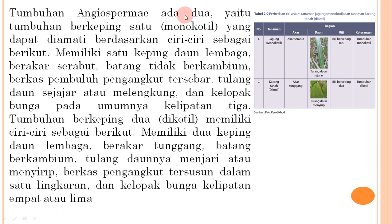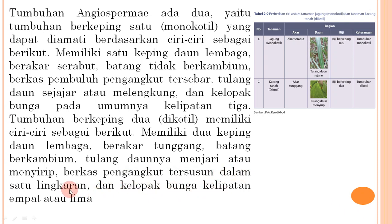Tumbuhan Angiospermae ada dua: monokotil (berkeping satu) dengan ciri memiliki satu keping daun lembaga, berakar serabut, batang tidak berkambium, berkas pembuluh pengangkut tersebar, tulang daun sejajar atau melengkung, dan kelopak bunga kelipatan tiga. Dikotil (berkeping dua) dengan ciri memiliki dua keping daun lembaga, berakar tunggang, batang berkambium, tulang daun menjari atau menyirip, berkas pengangkut tersusun dalam satu lingkaran, dan kelopak bunga kelipatan empat atau lima. Contoh perbedaan: jagung (monokotil) dan kacang tanah (dikotil).